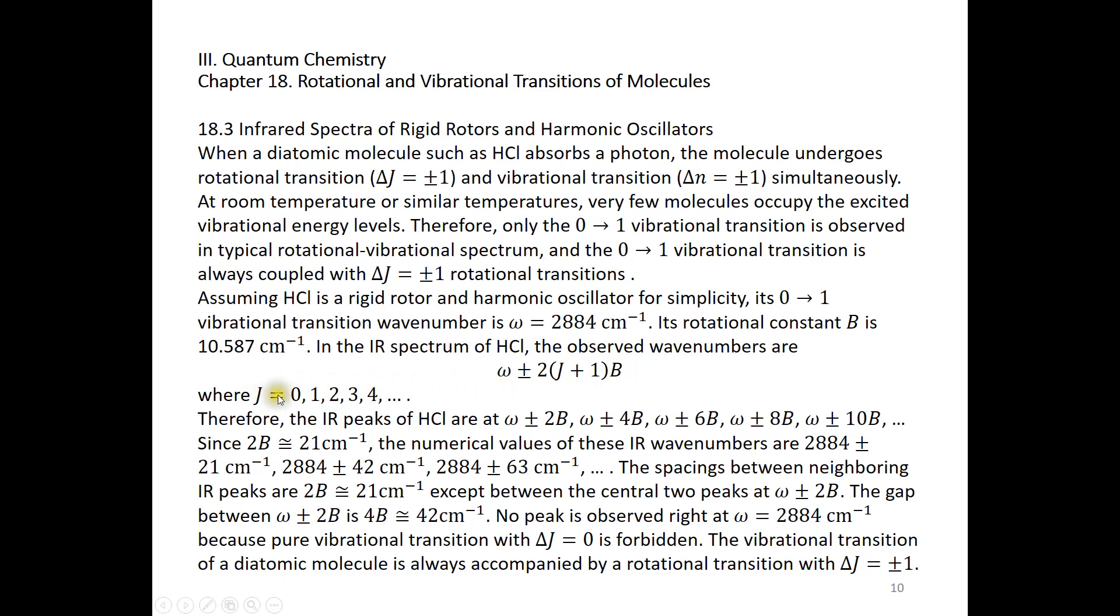Where J can be 0, 1, 2, 3, 4. Therefore, the infrared peaks of HCl are at omega plus or minus 2B, omega plus or minus 4B, plus or minus 6B, plus or minus 8B, etc. Since 2B is roughly 21 wave numbers, the numerical values of these infrared wave numbers should be 2884 plus or minus 21.